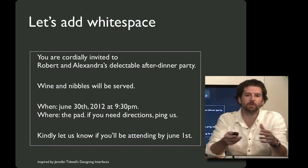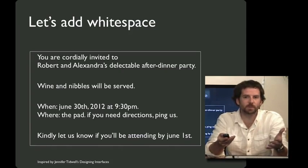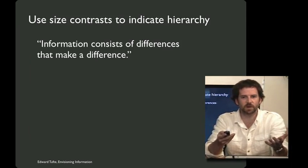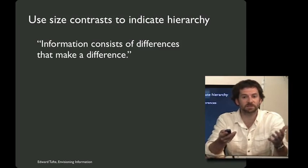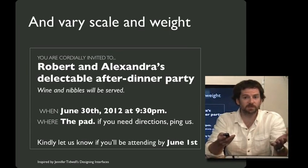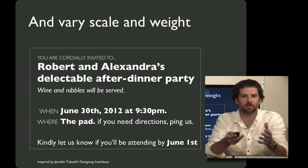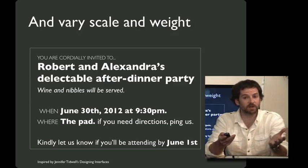But I bet we could do more. Let's explore using typographic variation and size contrast to give some sense of the visual hierarchy. And as Edward Tufte describes it, information consists of differences that make a difference. So here we've done some adding of scale and weight. This may or may not be the best design invitation in the world, but it gives you a sense of the kind of leverage that you can get by adding some typographic variation to your design.